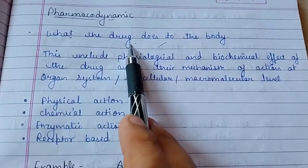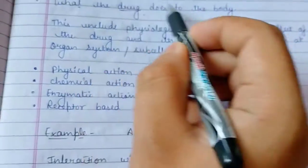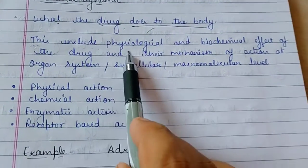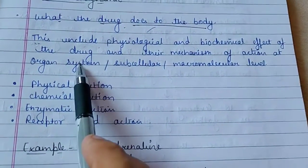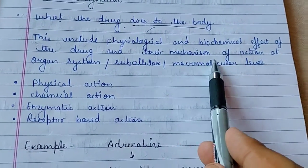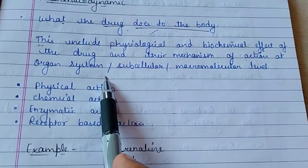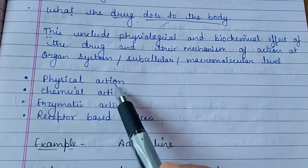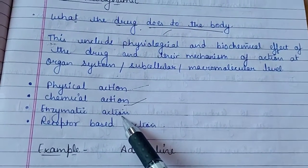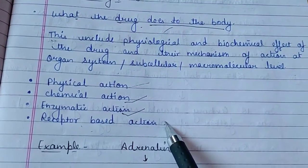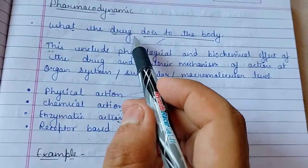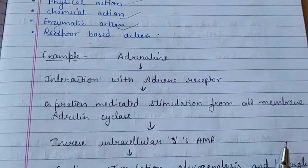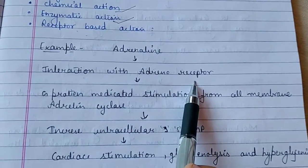Pharmacodynamics refers to what the drug does to the body — the biochemical effects of a drug and their mechanism of action at organ, system, subcellular, or molecular level. Actions include physical, chemical, enzymatic, and receptor-based actions.